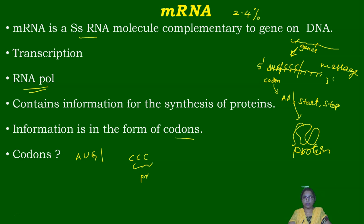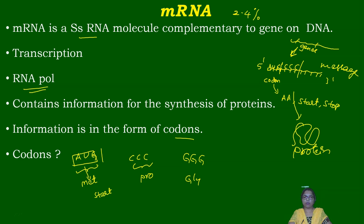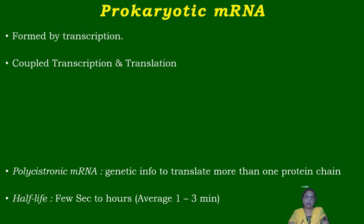The information in mRNA is in the form of codons — nothing but a triplet of three nitrogen bases. For example, CCC codes for the amino acid proline, AUG codes for methionine, and GGG codes for glycine. So each codon is three adjacent nitrogen bases that code for an amino acid, or for the start or stop signal of the polypeptide chain.